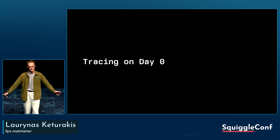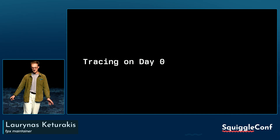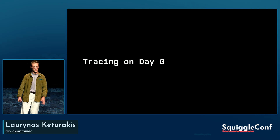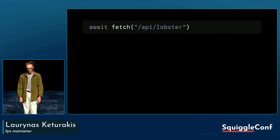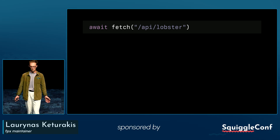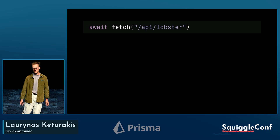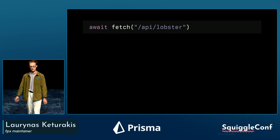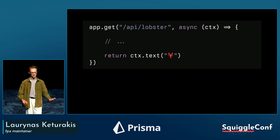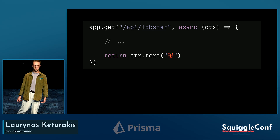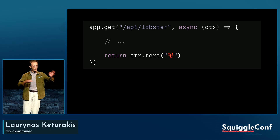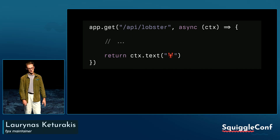Welcome to Tracing on Day Zero. We're going to be talking APIs, backends, tracing, logs, and we're going to try to cram everything in 10 minutes. Imagine that you have an endpoint that you're fetching data from. We're in the city that likes lobsters, so I use slash API slash lobster for this example. Here's a simple mock implementation signature of your API: you have your classic get method, your URL, and a handler where you do something and return the result.